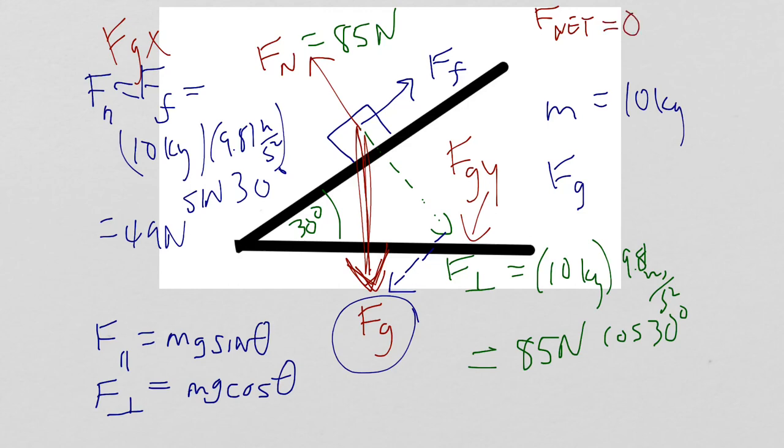Forces come in pairs, so your Fn, which is 85 newtons, is exactly the same as my F perpendicular, or Fgy, of 85 newtons. The force of friction, and the parallel force, or Fgx, is the same magnitude of 49 newtons.